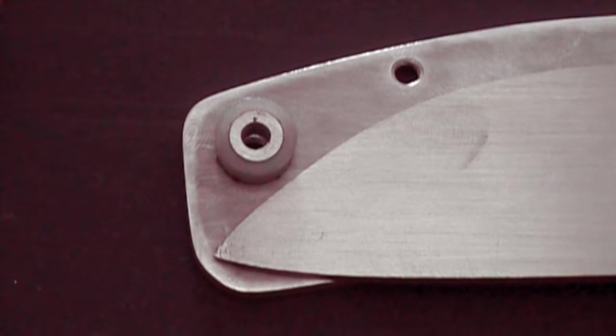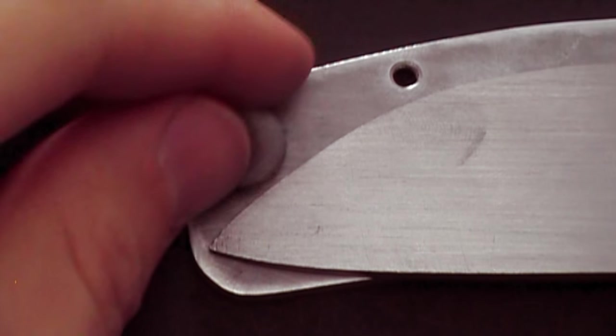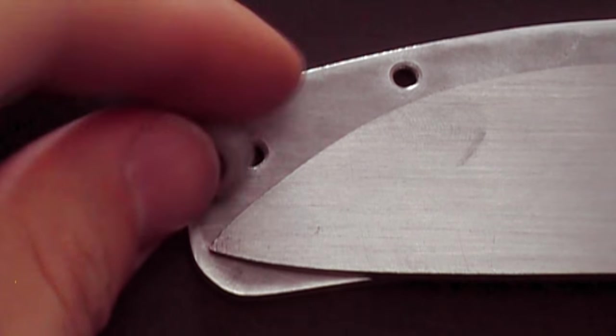This bottom spacer has a nylon sheath around it because the blade actually contacts that one when closed.